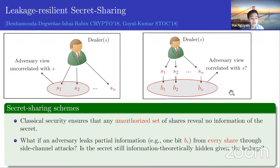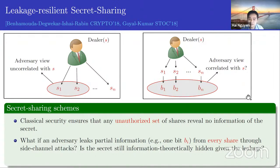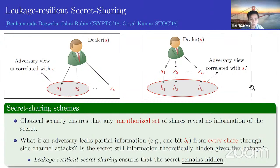Is the joint distribution of the leaked bits B1, B2, ..., BN uncorrelated with the secret S? Leakage-resilient secret sharing ensures the secret S remains hidden given the leakage. This is a very useful primitive with connections to many fields: it relates to the problem of repairing error-correcting codes, has been used as a building block for MPC protocols resilient to local leakage attacks, and also as a modular building block for other primitives such as non-malleable secret sharing.